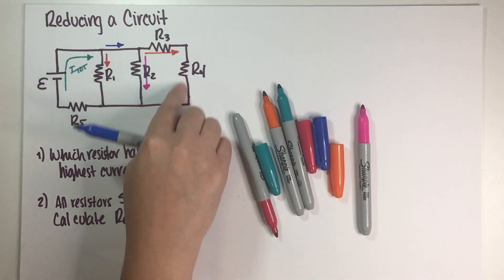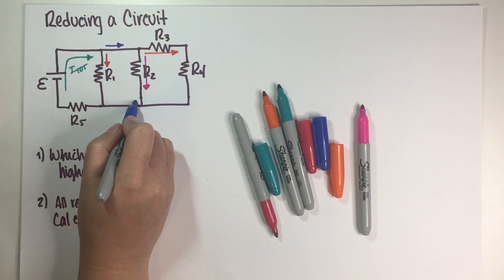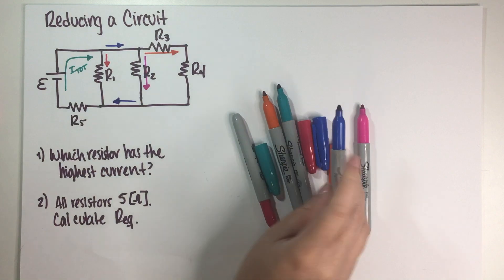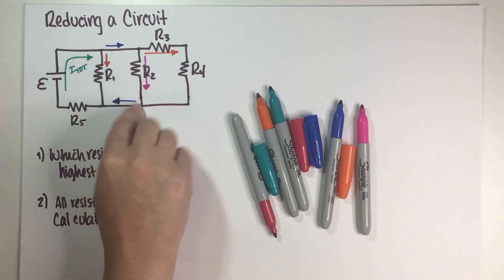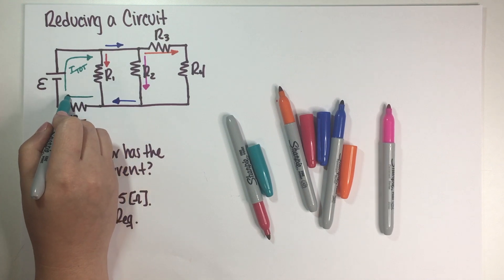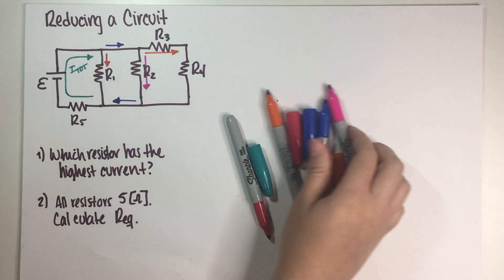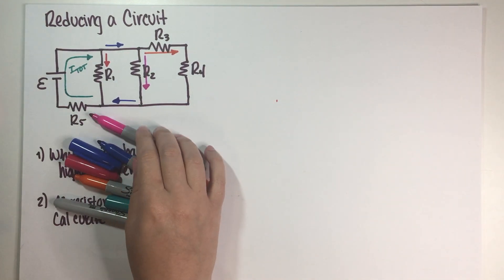So this orange current is going to look like this, this pink current is going to look like this. Now once both of them reach this junction, they are going to recombine into blue, and blue is going to get out of here. And once blue and red recombine, they are going to recombine into our total current. And that's basically the currents that we have.